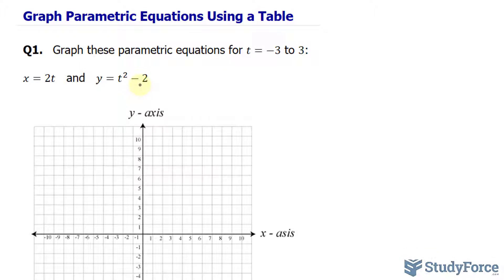To do these types of questions manually by hand, you need to create a table. In your first column, you have the t values, which range from negative 3 to 3.